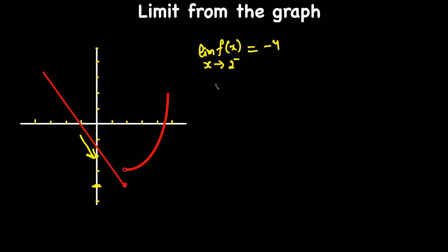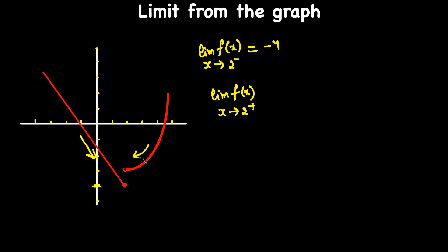Now we do the limit from the right-hand side: the limit of f of x as x approaches 2 from the right. Moving along this graph, we are approaching 2 and it lands on this hole, which gives us negative 3.